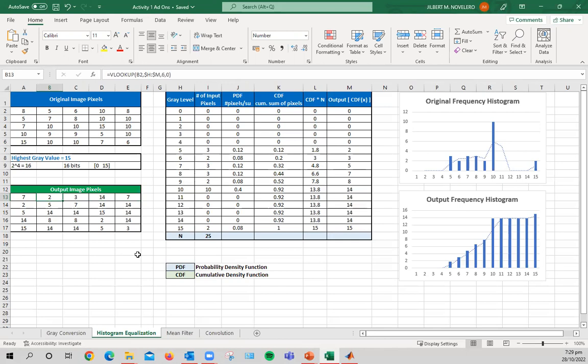But using MATLAB, it is very simple. Now, looking at the output frequency histogram, you will notice that the equal distribution of the gray level values, now you can see on the frequency histogram. Previously, you will be seeing blanks at the beginning, at the middle. But right now, the output frequency histogram is equalized.